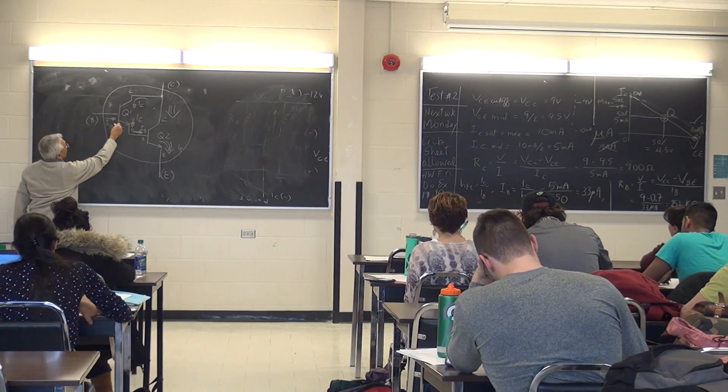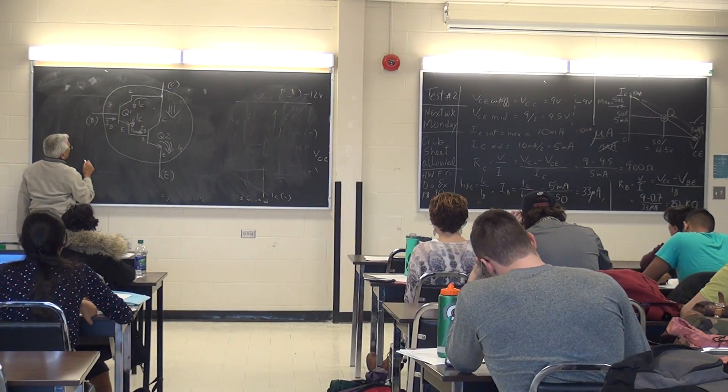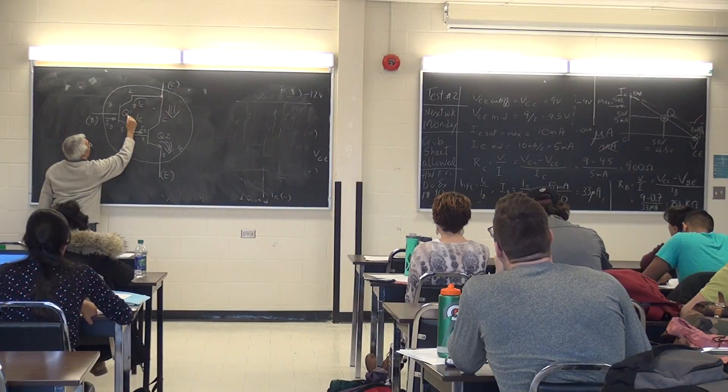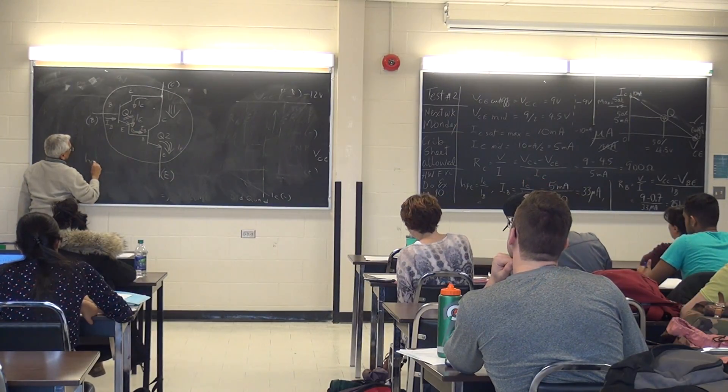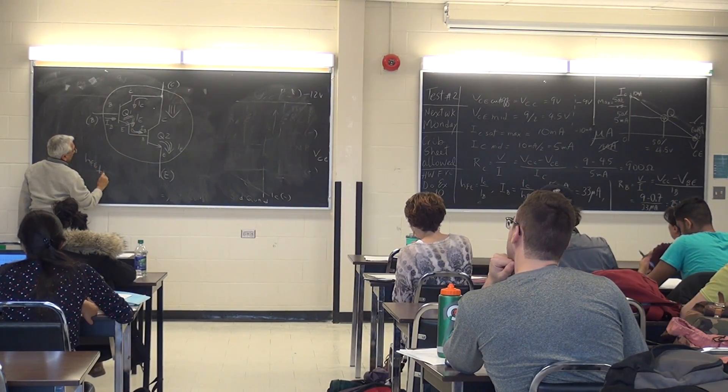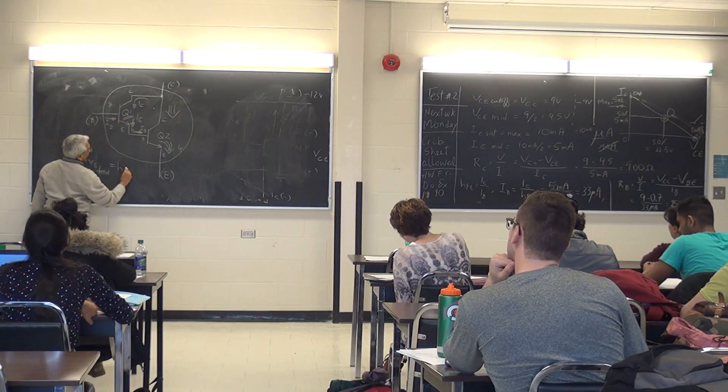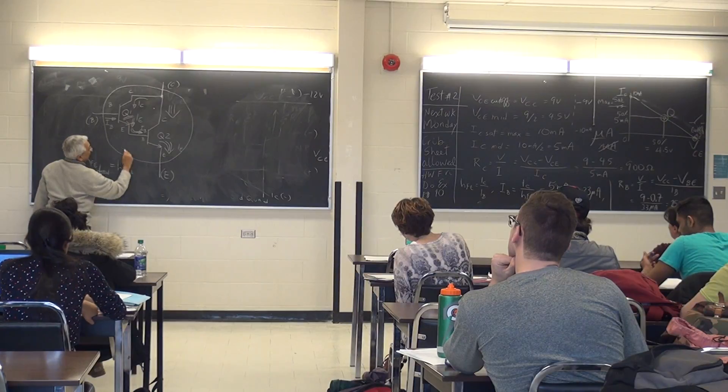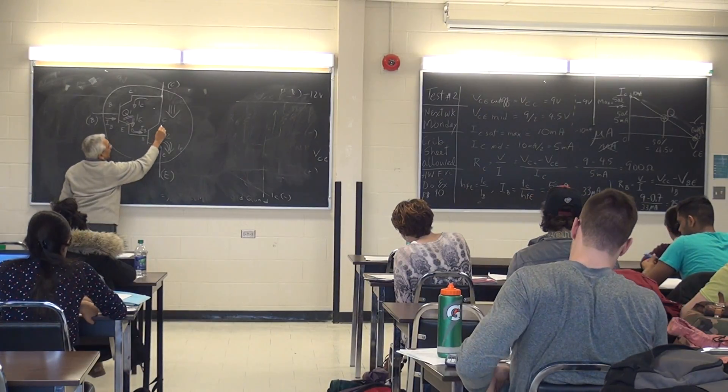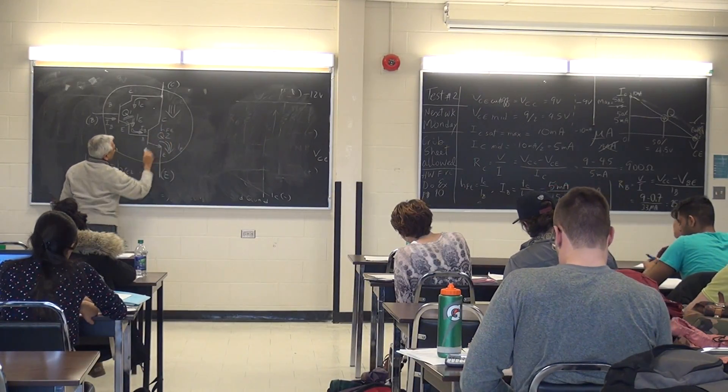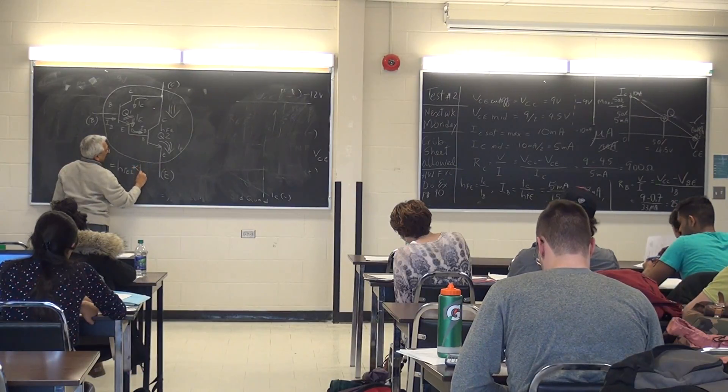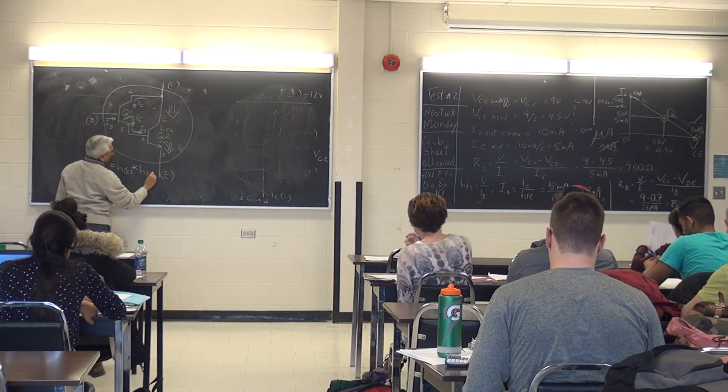And basically what it means is you've got your HFE at Q1. HFE total is going to be HFE of the first one, not added with the HFE of the second one, but multiplied by HFE of the second one.